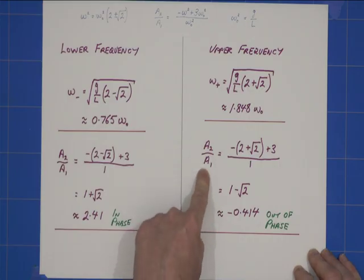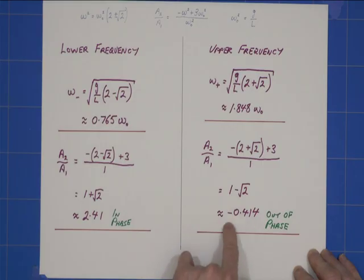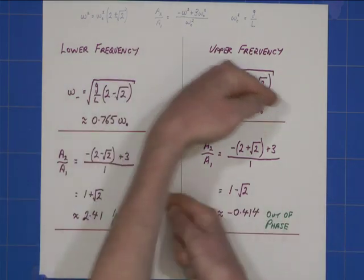And similarly, A2 over A1 is this, which gives me that here, and here they are out of phase because it's negative, so the two masses are doing this.